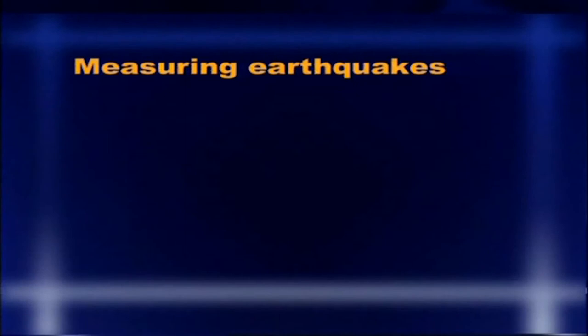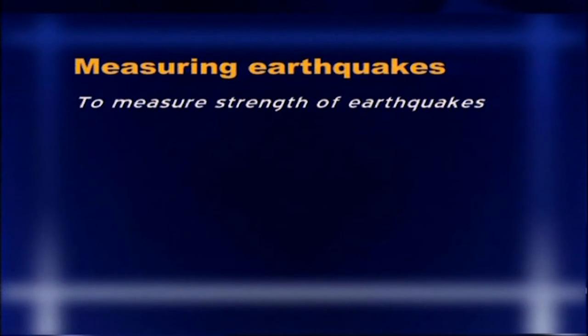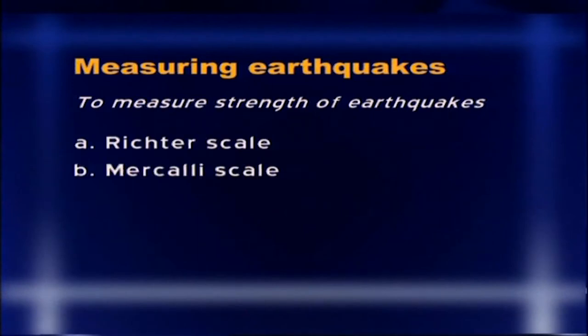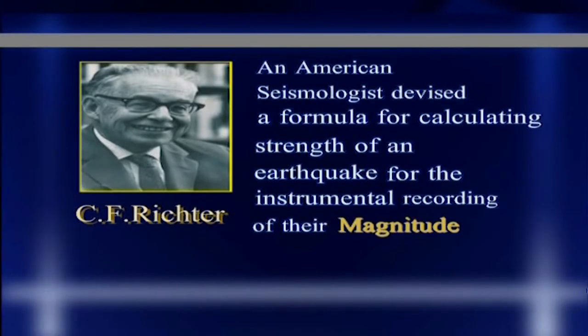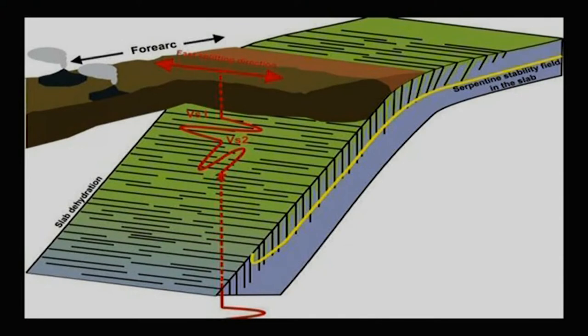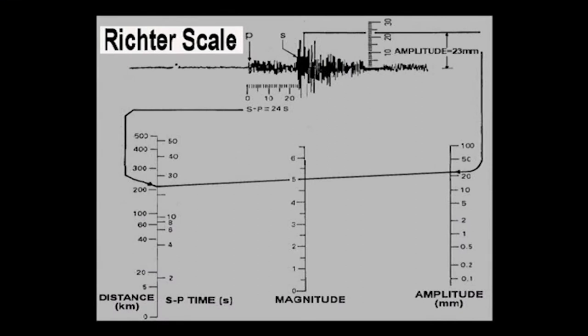There are two main methods of measuring the strength of earthquakes: the Richter scale and the Mercalli scale. In 1935, C.F. Richter, an American seismologist, devised a formula for calculating the strength of an earthquake and the instrument recording its magnitude. This is related to the total amount of energy stored in rock under stress and released during an earthquake at the focus. The scale is open-ended, ranging from 0 to 8.9, which is the largest recorded earthquake in Chile, producing energy equivalent to 10 raised to the power of 27.2 ergs.